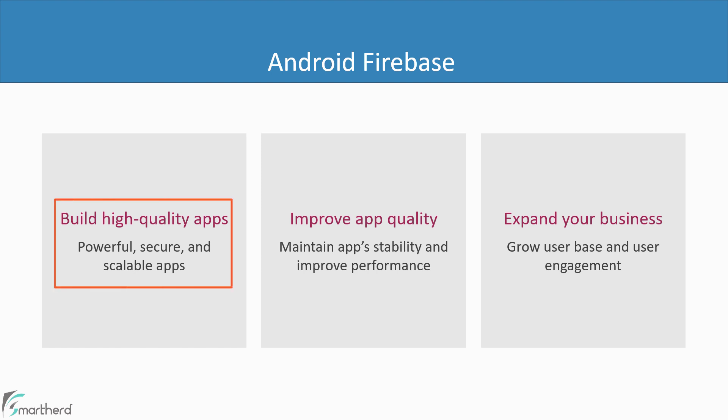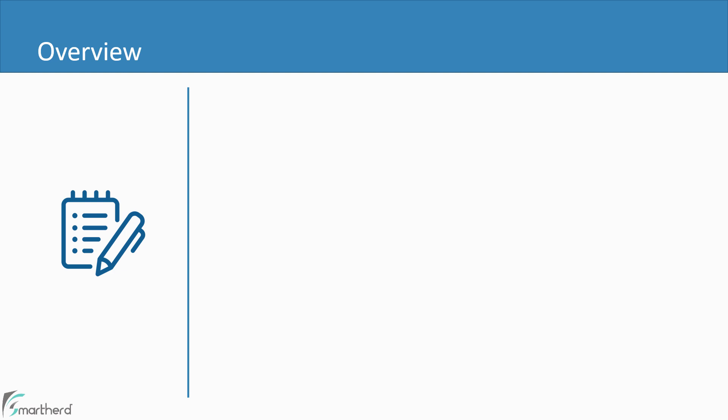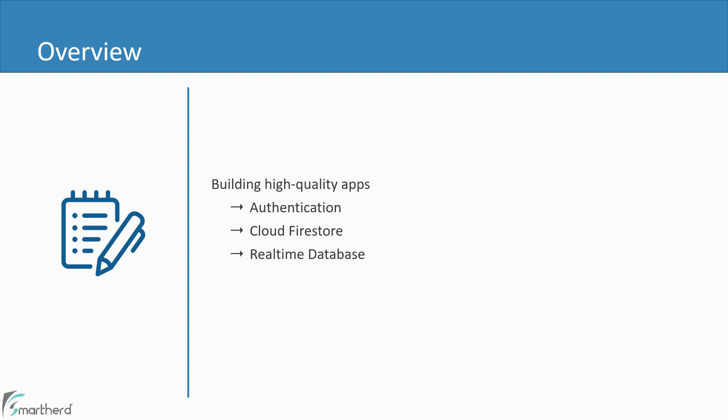Let us start with how to create high-quality applications using Firebase. Under this section, you will get to know various Firebase products which you can use to develop your application. The list of products includes: Authentication, which will help you to authenticate your application users; Cloud Firestore and Real-Time Database, which are Firebase databases used to store data; Cloud Storage, meant to store any type of file such as photos, videos, and GIFs; and finally Firebase Cloud Functions, which provides a serverless backend experience to developers.